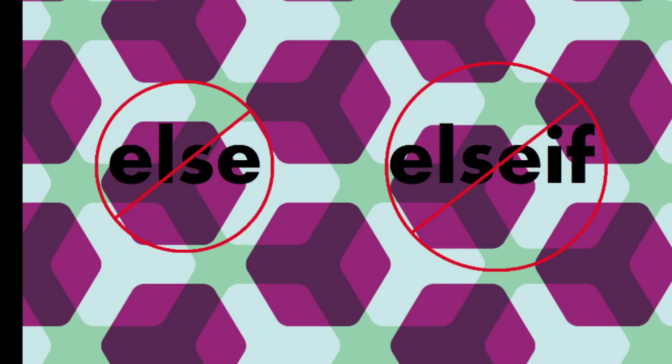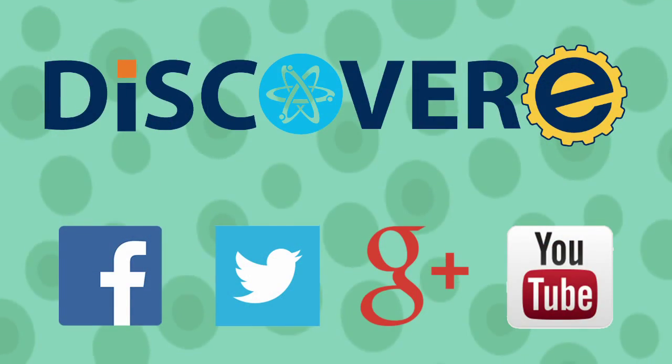Note that you don't need else if or else at all. You can just quickly check something using if alone. If and else if always have a condition to check, even if the condition is just true or false. But else doesn't have a condition — it just runs after the other conditions fail.